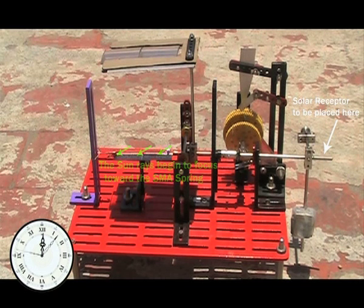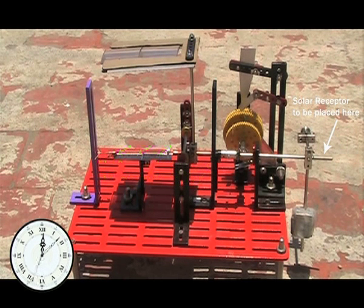The focused rays start heating the SMA spring causing it to contract. This action pulls the cable connected to the SMA spring, causing the cable to rotate pulley A.